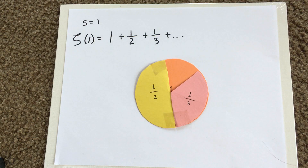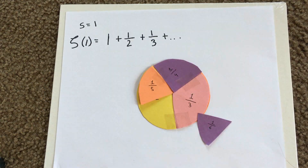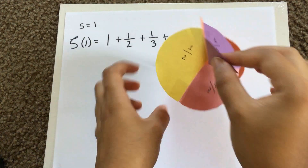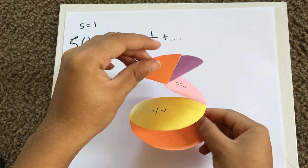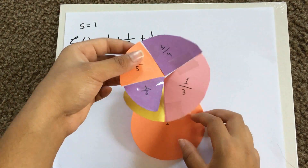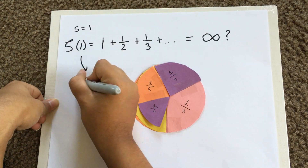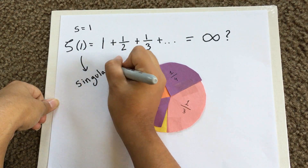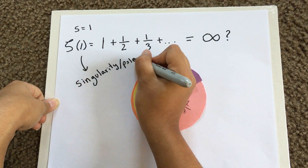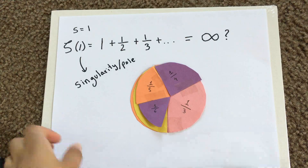You can see this circle thing will spiral into infinity as I continue to add fractions to it. Therefore, because s equals 1 is undefined, it is called a singularity, or a pole.